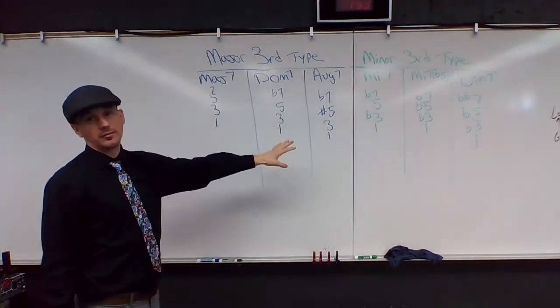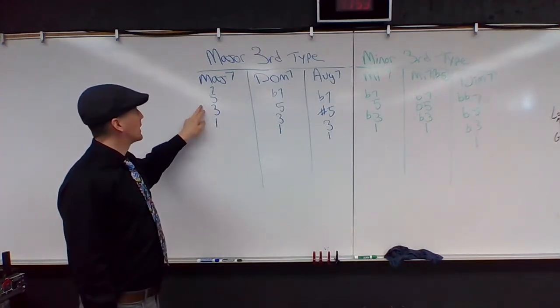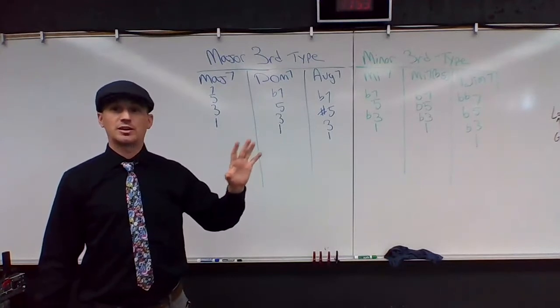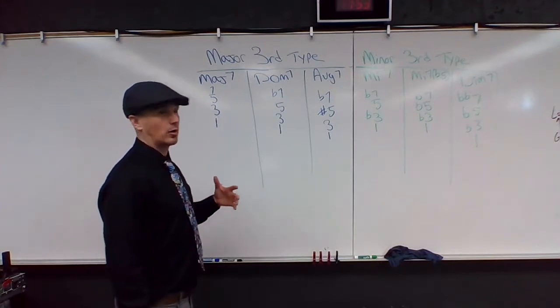From most common to least common, we have major seven with a one, three, five, seven. That's straight from the major scale. So we just write the major scale, we generate the one, three, five, seven, and that gives us our major seven chord harmony.